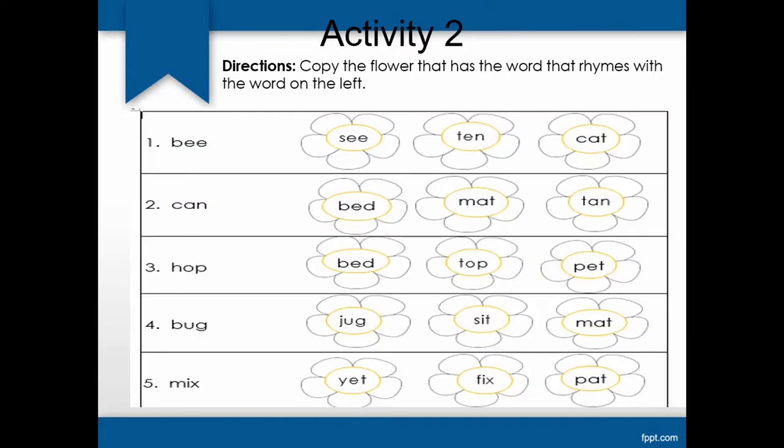For the second activity, copy the flower that has the word that rhymes with the word on the left. I will read each word. Bee. What word rhymes with the word bee? Is it see, ten, or cat? See.